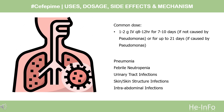Dose. The dose of this medicine will be different for different patients. Pneumonia: Treatment of moderate to severe pneumonia, 1–2g IV Q8–12 hours for 7–10 days if not caused by Pseudomonas, or for up to 21 days if caused by Pseudomonas.